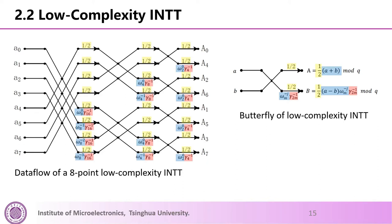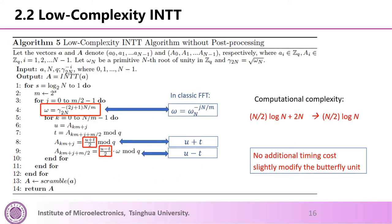Similar to the low-complexity NTT, only N powers of gamma need to be pre-computed and stored. This is the final low-complexity INTT algorithm without postprocessing. This method eliminates the modular multiplications of postprocessing, reducing INTT complexity from (N/2)·log N + 2N to (N/2)·log N. This method has no additional timing cost in our architecture — it just needs a slight modification to the butterfly unit.